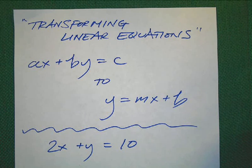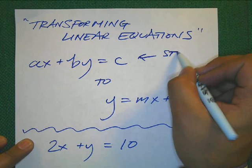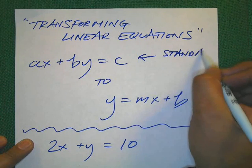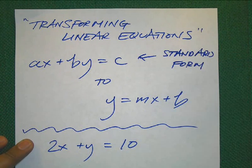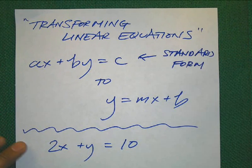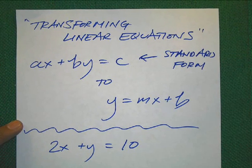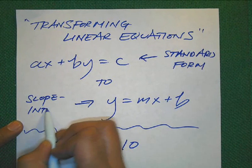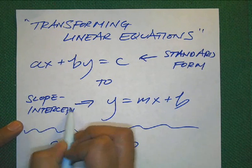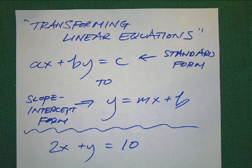Now, transforming linear equations basically means when you're given an equation in what we call standard form, you want to transform it into a form that you are familiar with, which is called Slope Intercept Form, which is something that you already know.